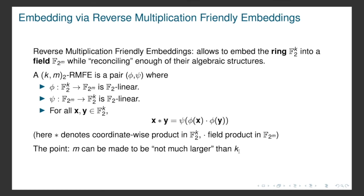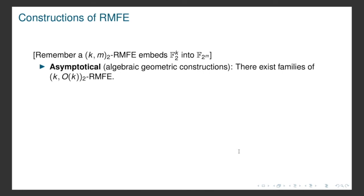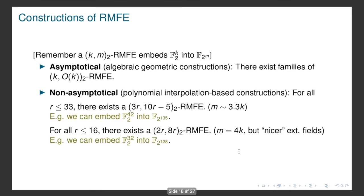That is the main idea of our paper. Asymptotically we can show that M is a constant times K. For concrete non-asymptotic parameters, we have two results: the first shows that we can get M around 3.3 times K, and the other shows M about 4 times K. These allow for example nice extension fields such as F_{2^{128}}.